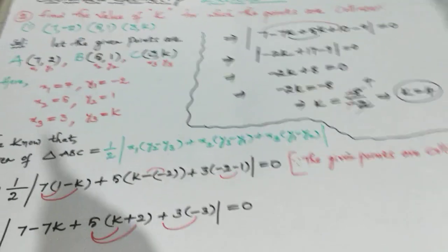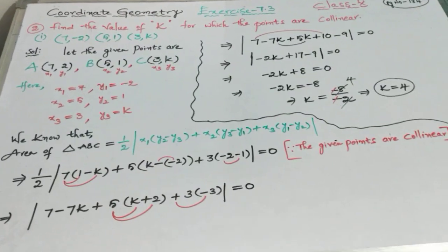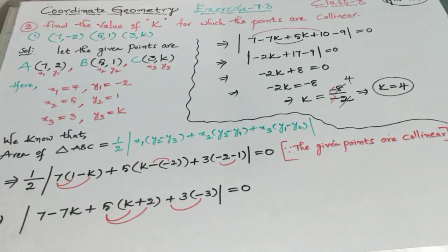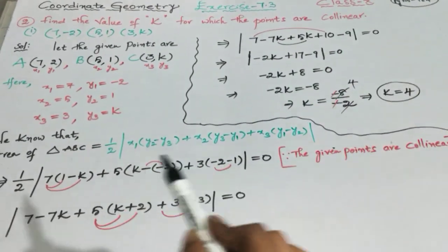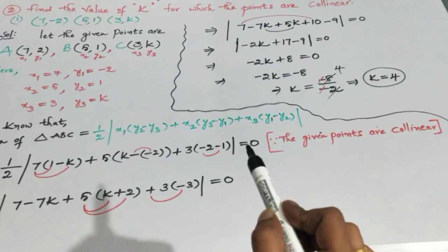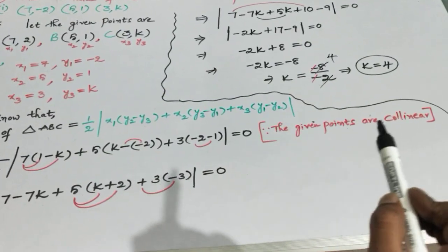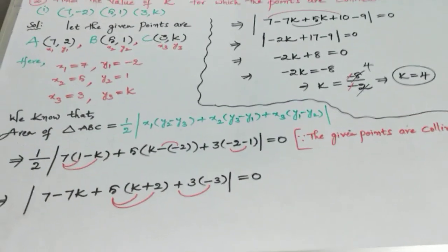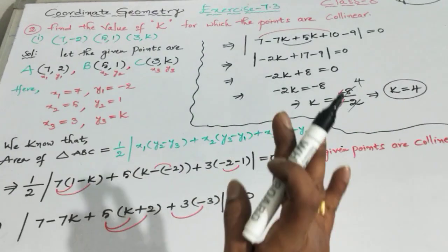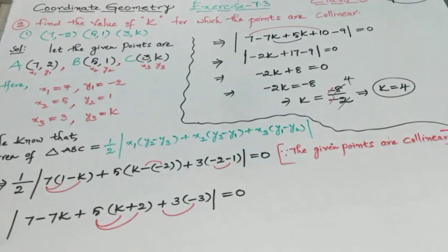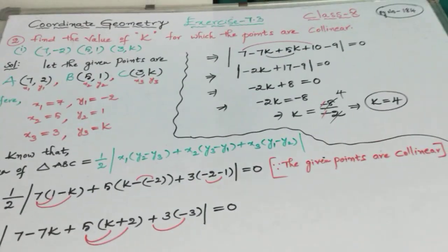There are two more questions in Roman numeral two — try to practice those yourself. The key concept: when points are collinear, apply the area of triangle formula and set it equal to zero. If the question mentions collinear, definitely set area equal to zero. In the next video, I will upload the third, fourth, and fifth questions as well. Thanks for watching.